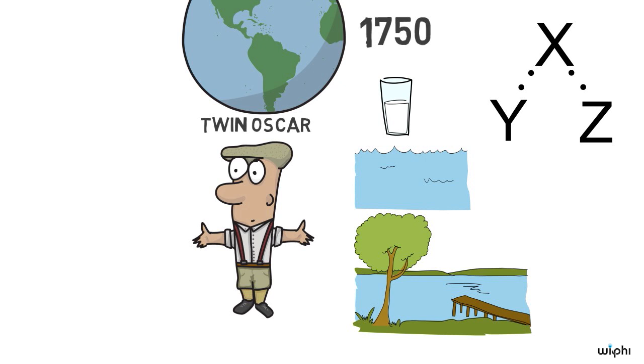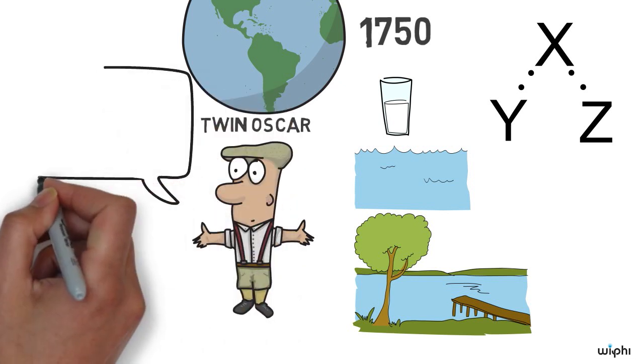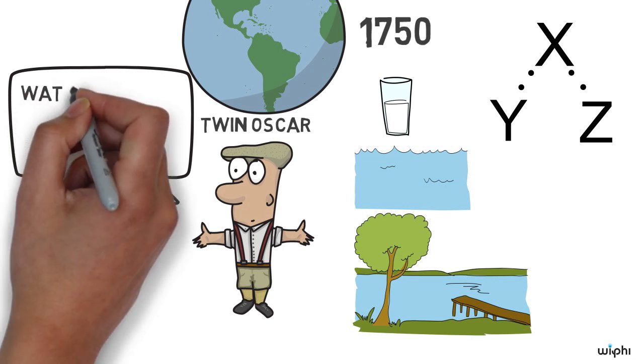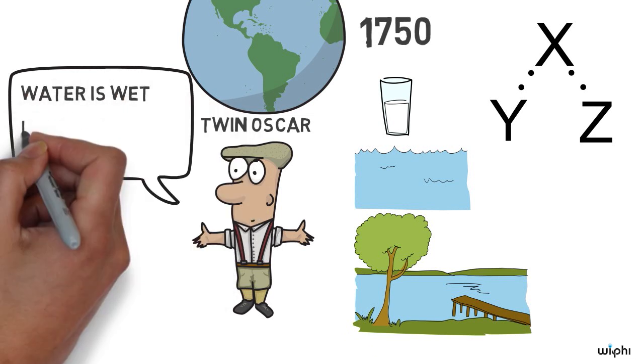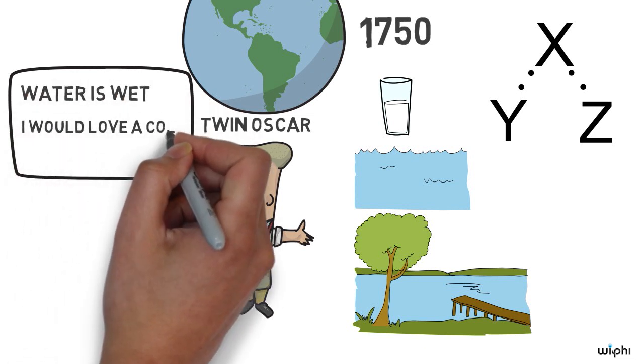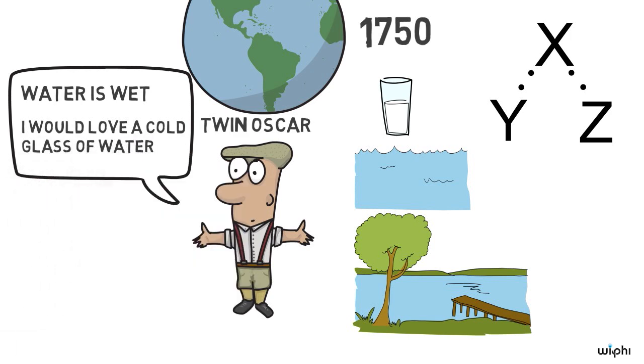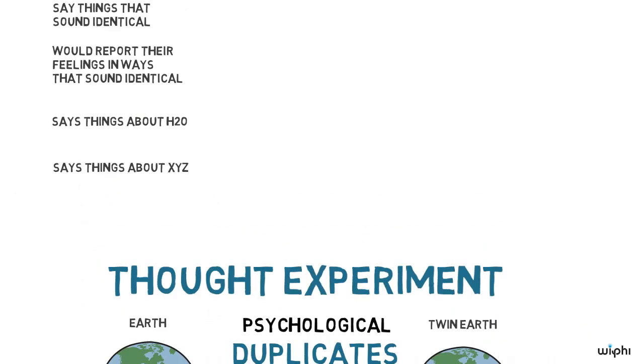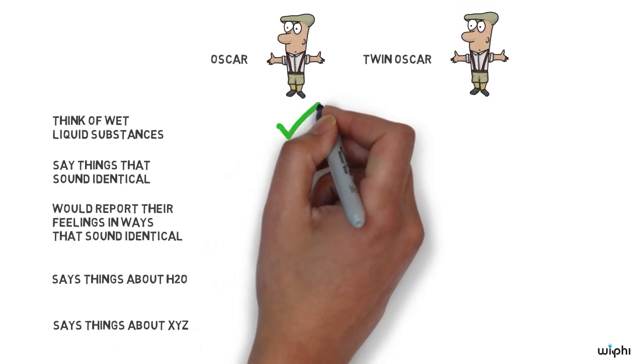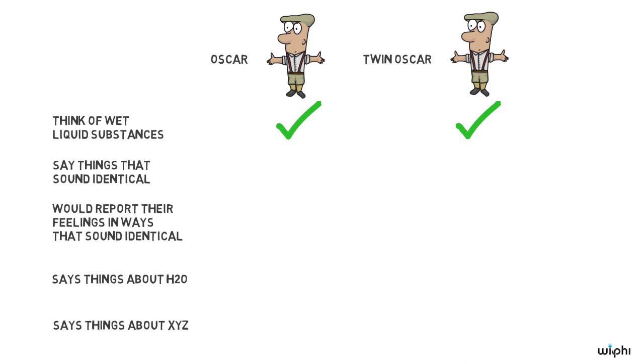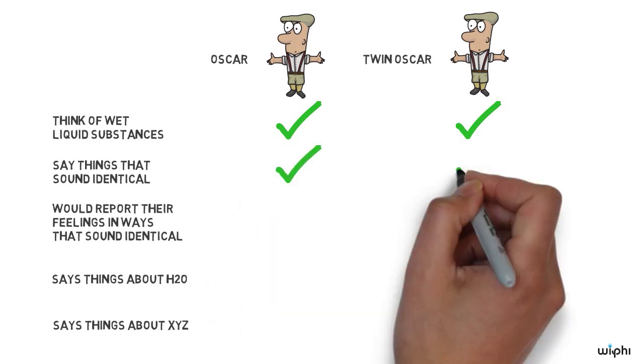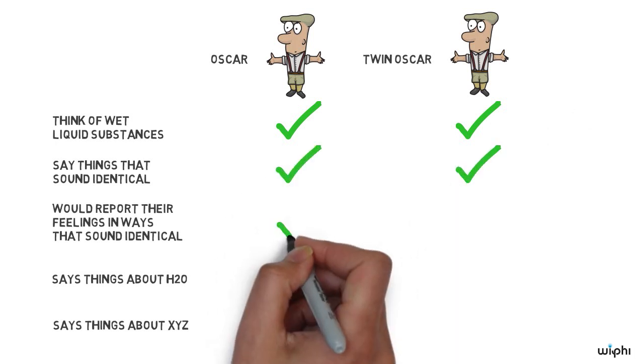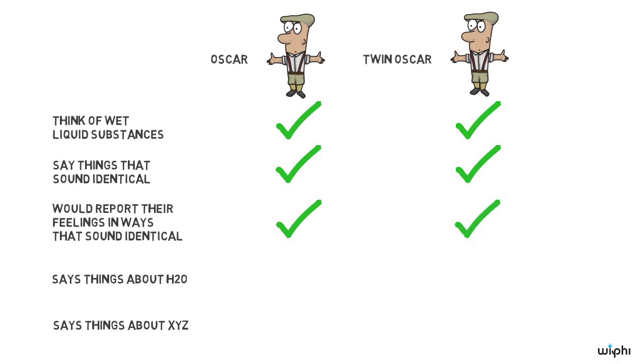On Twin Earth, Twin Oscar has come in contact with XYZ. Twin Oscar would say things that sound like this, water is wet, and I would love a cold glass of water. Oscar and Twin Oscar are, according to Putnam, psychological duplicates. Both think of wet liquid substances that fill lakes and streams. They say things that sound identical. They would report their feelings in ways that sound identical.